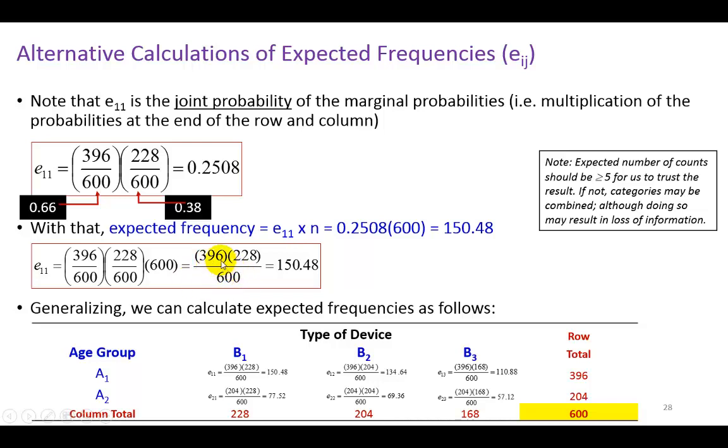So, basically, if you multiply these two marginal numbers, 396 by 228 and divide by the total sample, you're going to get the same 150.38. So, this is an alternative and quicker representation, which you might see in many textbooks. So, by multiplying the marginal probabilities and dividing by the total sample will fetch you the expected frequency.